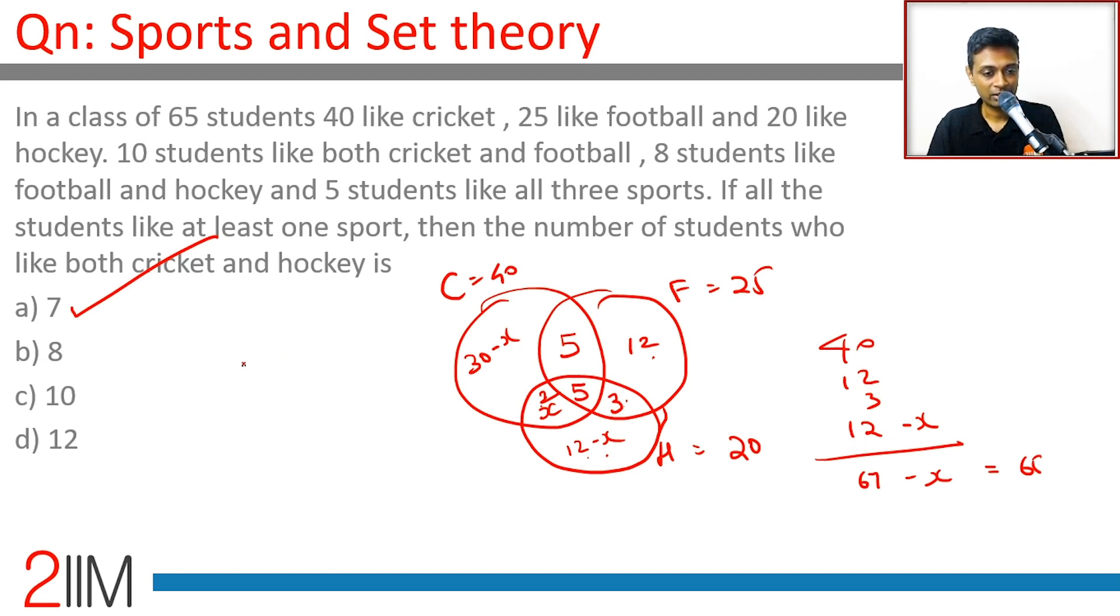We could have done this the algebraic way, saying C plus F plus H minus C intersection F minus F intersection H minus C intersection H plus C intersection F intersection H is equal to 65, and then simplify and get it from there. That's another approach.